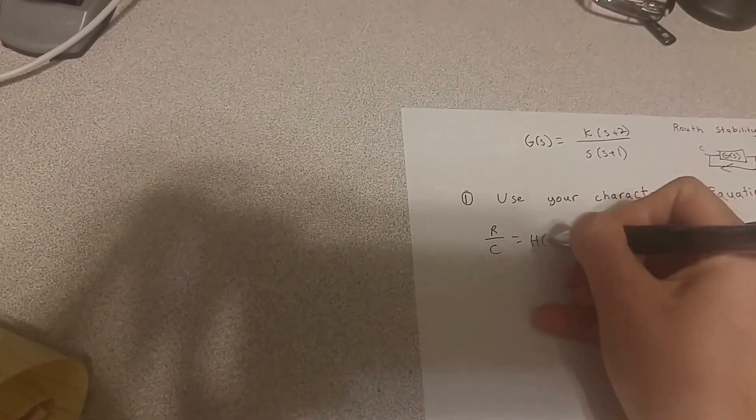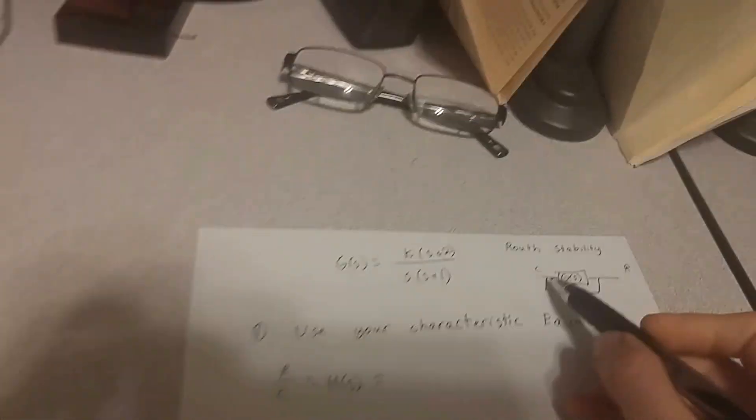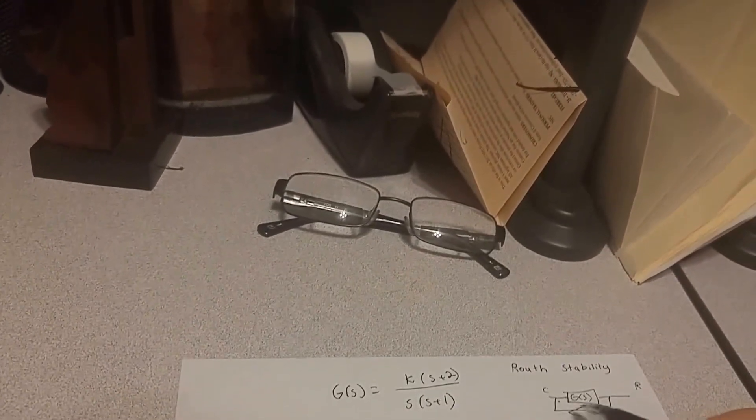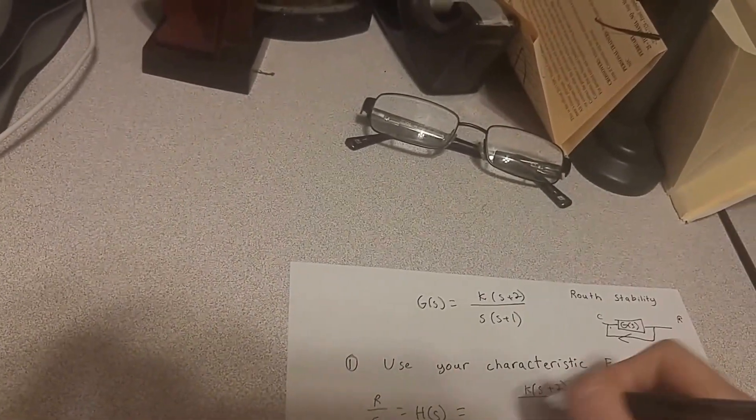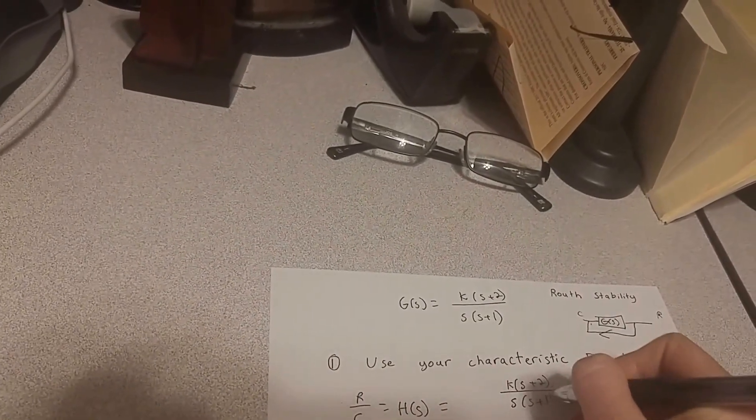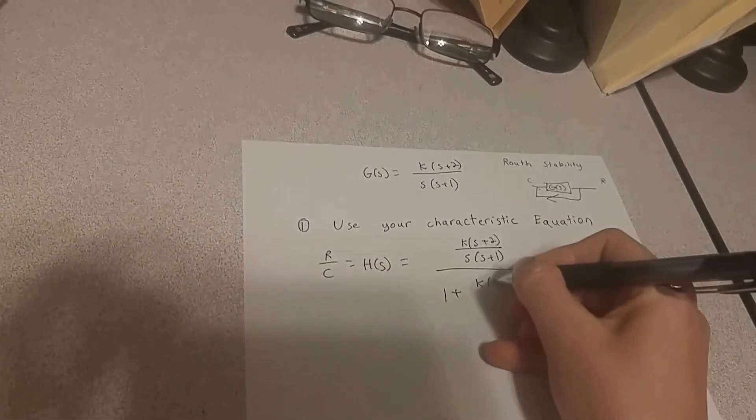This is h of s, which is the forward gain divided by 1 minus the loop gain, or in this case, it's going to be k times s plus 2 over s times s plus 1, divided by 1 plus that whole thing over again.